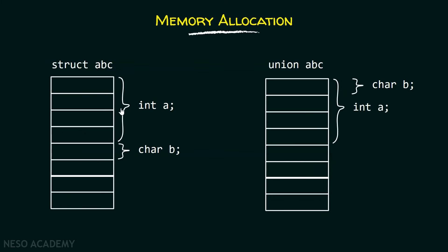Here is the pictorial representation of memory allocation in structure as well as union. In structure, integer a and character b have different memory locations. Integer will get 4 blocks of memory because integer size is 4 bytes and 1 block equals 1 byte, so they take 4 blocks total, and after that character gets its own memory. But in the case of union, both integer a and character b share the same memory location — they both have the same initial address.